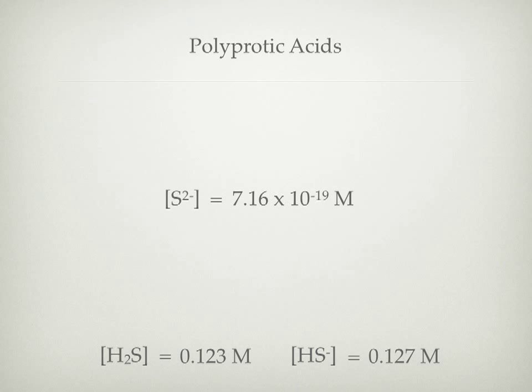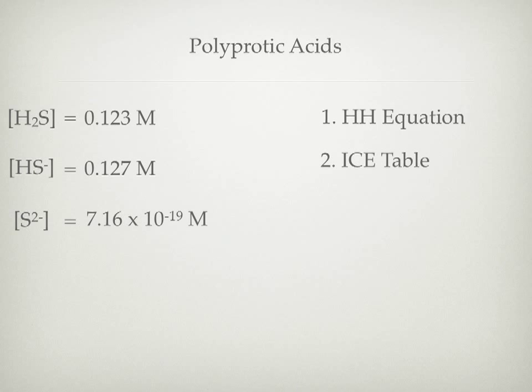That number represents our S²⁻ concentration. Let's review what we've done: we started with what was given, used the Henderson-Hasselbalch equation in a rearranged form, and from an ICE table solved for x = 0.127, giving us the first two concentrations. Then from that and the given pH, we set up a second ICE table to express Ka2 and solve for the third concentration. It seems daunting, but it's not too bad.